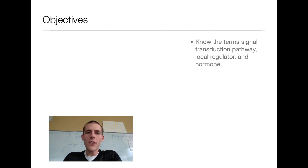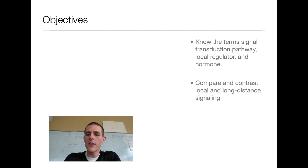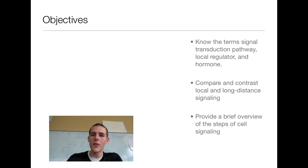So today's video is going to be pretty vocab heavy. First objective, know the terms signal transduction pathway, local regulator, and hormone. You're going to be ready for Scrabble after this. Next one, compare and contrast local and long distance signaling. And finally, provide a brief overview of the steps of cell signaling. So without further ado, let's go ahead and get on into it.